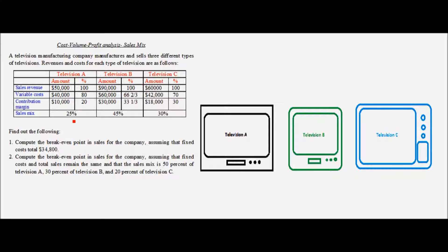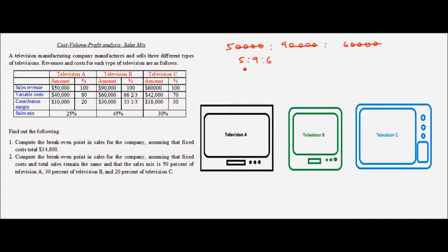We have been given the sales mix — that means the ratio of total sales revenue the company makes by selling these three types of televisions. The ratio of sales revenue from television A is 25, television B is 45, and television C is 30. The sales revenue from television A is $50,000, television B is $90,000, and television C is $60,000. We can remove the four common zeros, so it becomes 5 to 9 to 6 — the ratio in which these three televisions are selling.